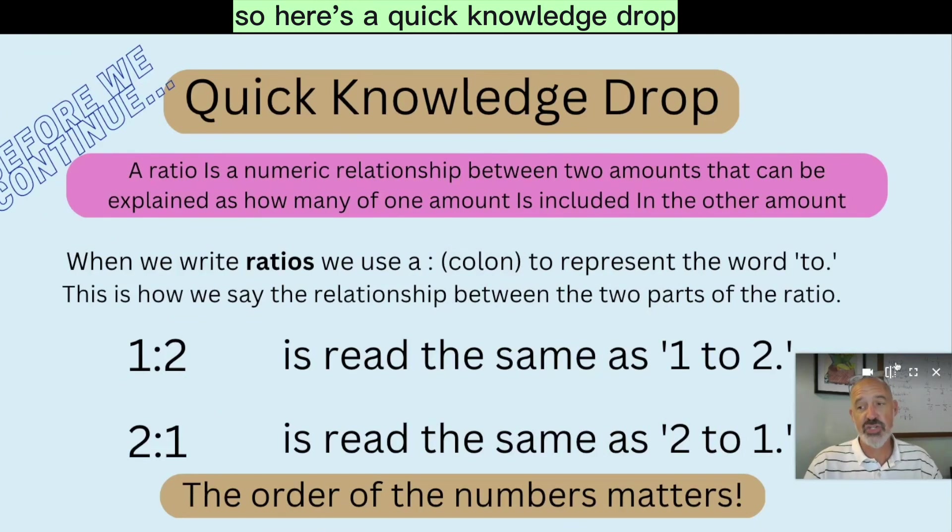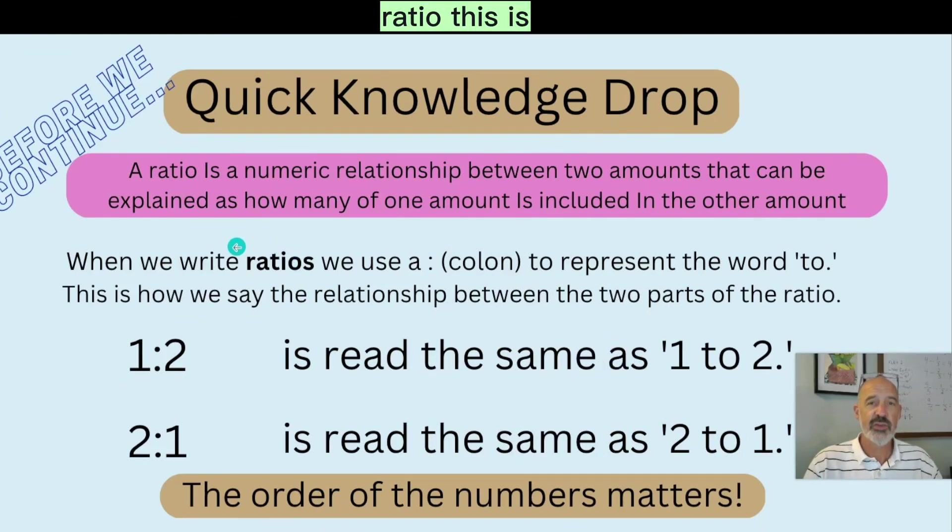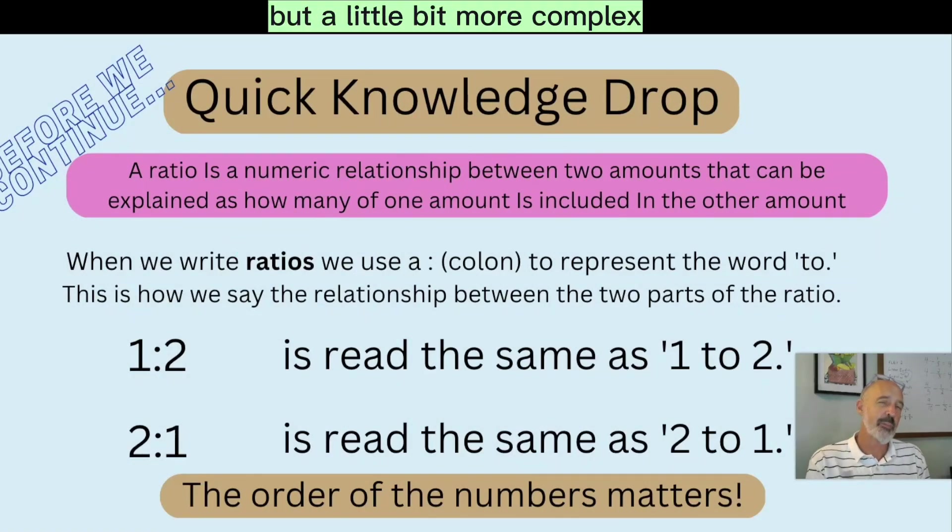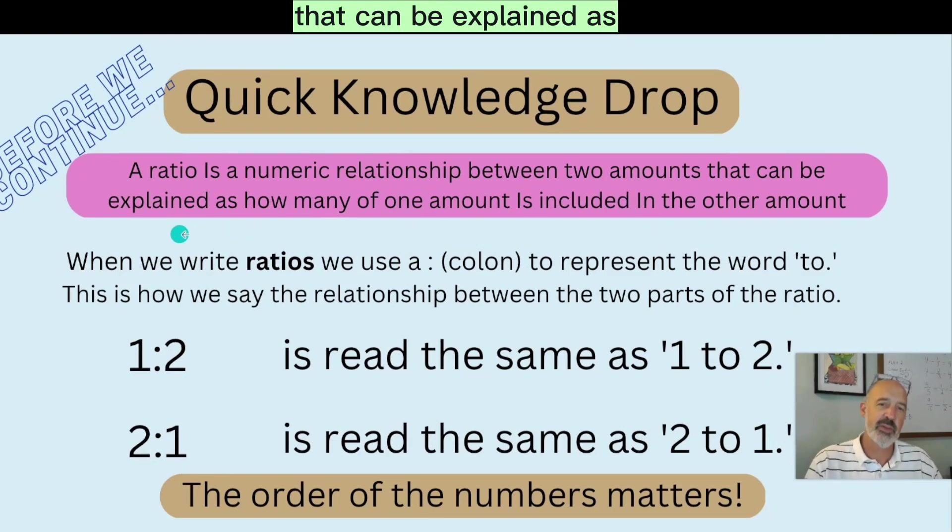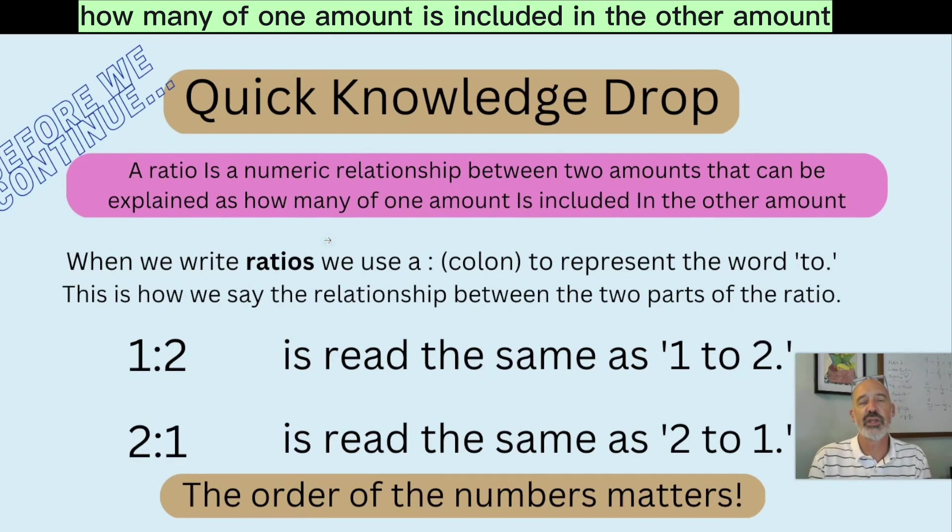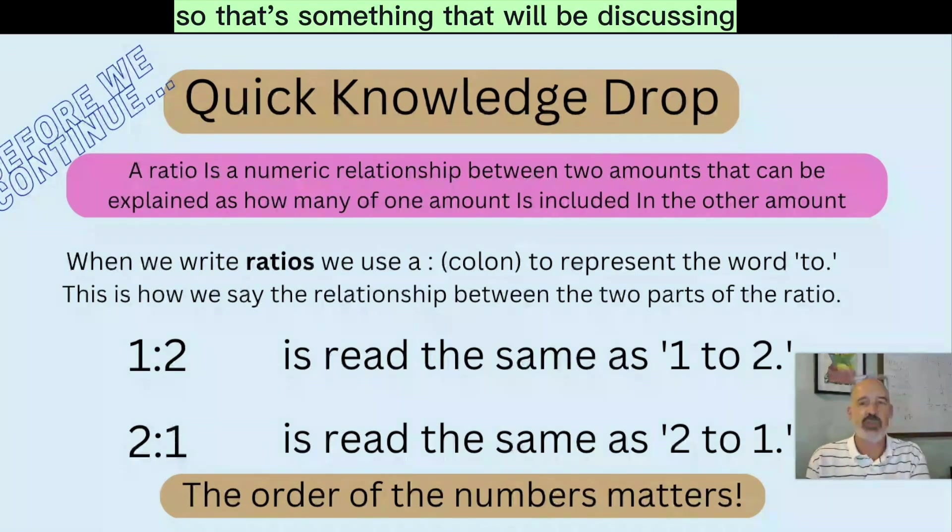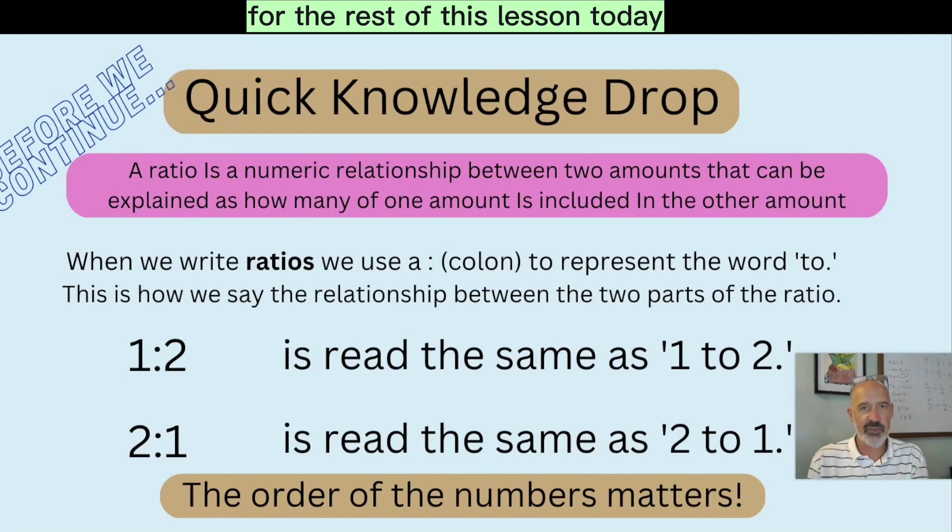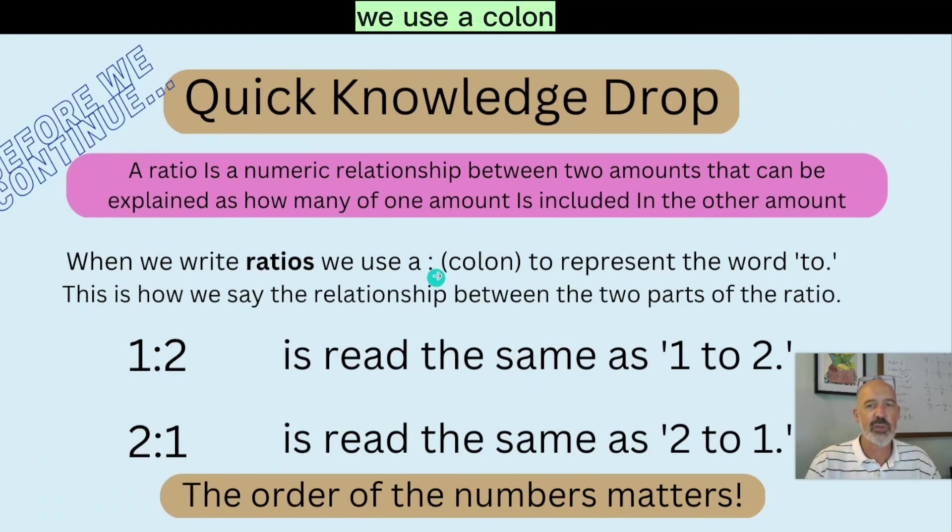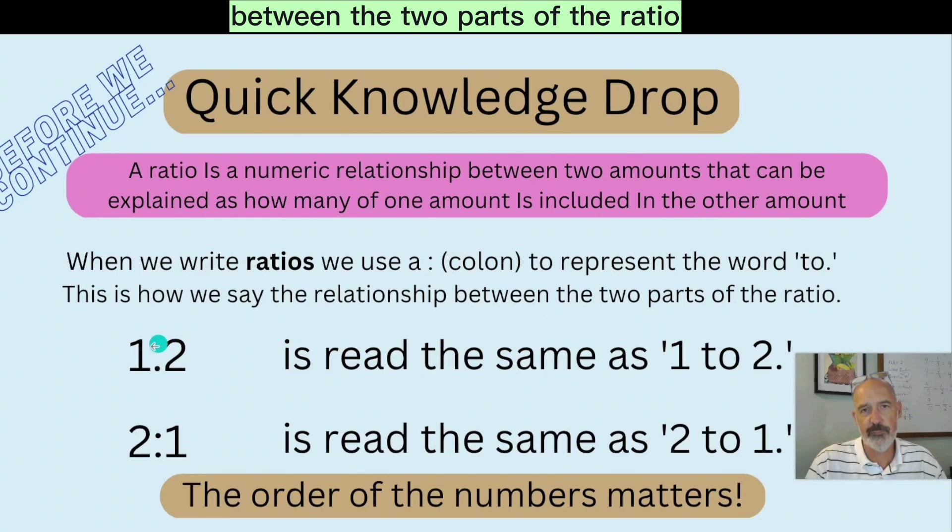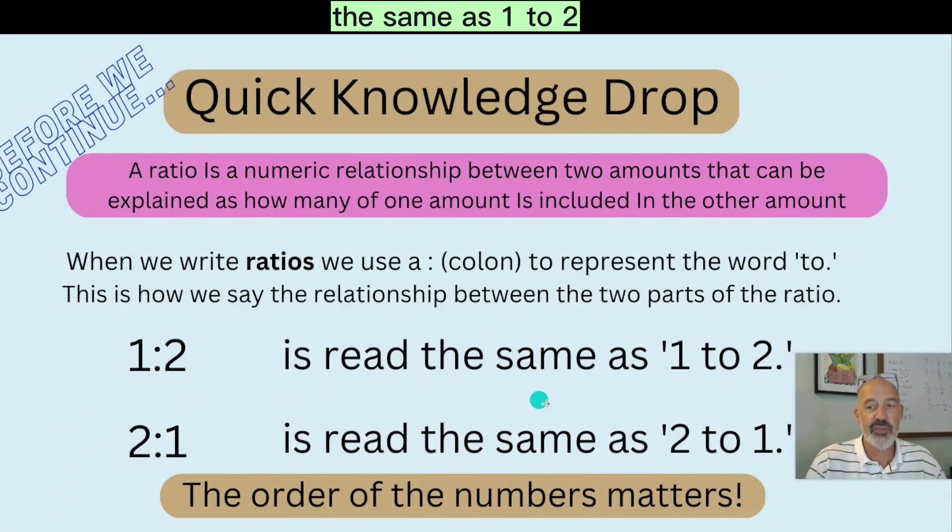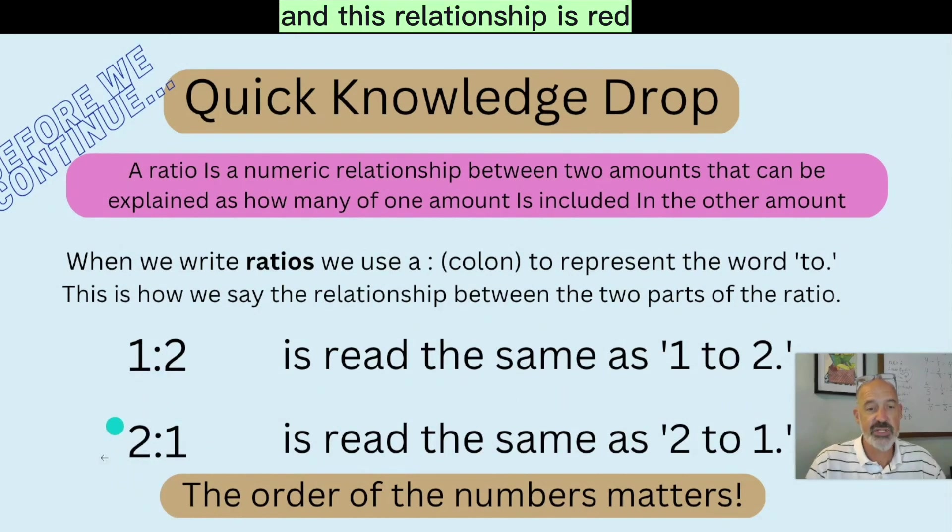Now we're going to continue by talking a little bit more about ratios before we bring in our next activity. So here's a quick knowledge drop for you all. A ratio, this is like the same definition as before, but a little bit more complex. A ratio is a numeric relationship between two amounts that can be explained as how many of one amount is included in the other amount. So that's something that we'll be discussing for the rest of this lesson today. Now, when we write a ratio, we use a colon, which is those two vertical dots to represent the word two. So this is how we say the relationships between the two parts of the ratio. This is red, the same as one to two. And this relationship is red, the same as two to one. Now, the order of the numbers does matter, and we'll cover that in subsequent videos.